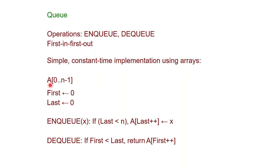We can use an array A for having a maximum number N of elements in the queue. The array A will go from 0 to N-1. We keep two pointers, first and last, in the array. To support the enqueue of an element X, we first check if last is less than N.